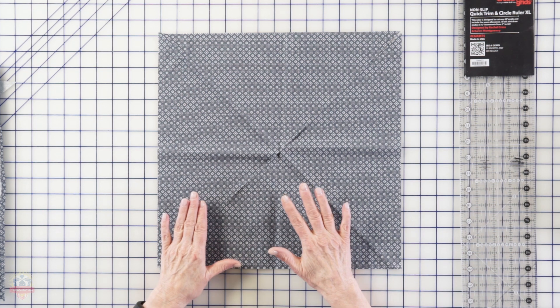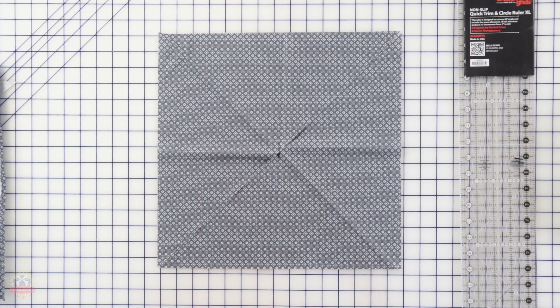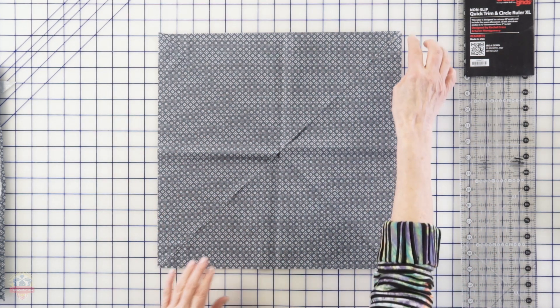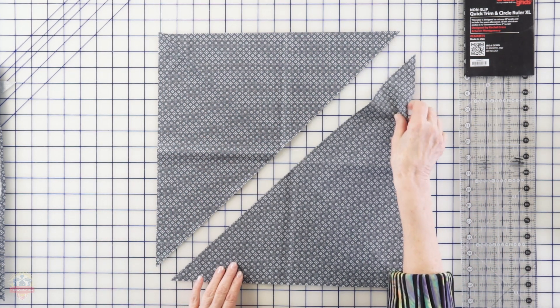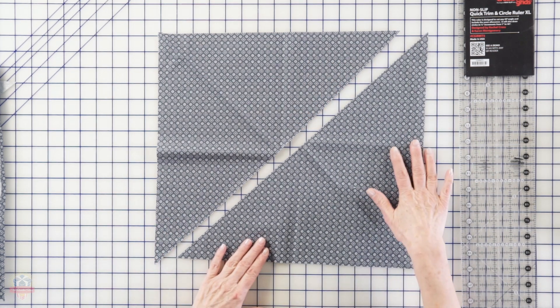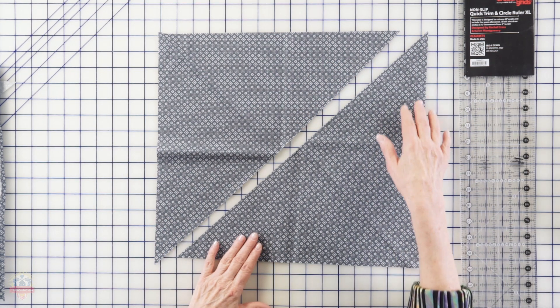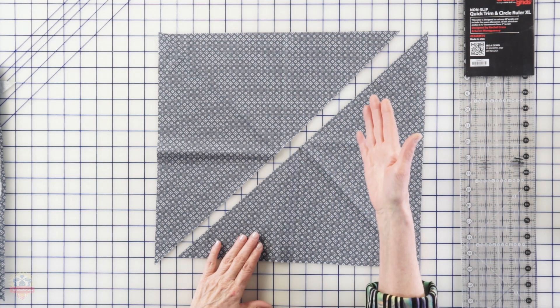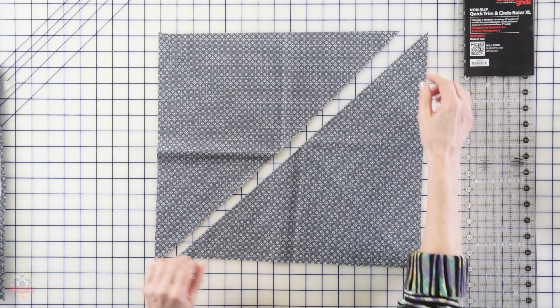We always start with a square and the size of the square is determined by the final amount that you need, so the pattern will tell you exactly what size to cut. You're going to cut your square from corner to corner diagonally so that you have two triangles of fabric, and then you're going to join those together on the straight grain edges so that your bias edges are on the outside.